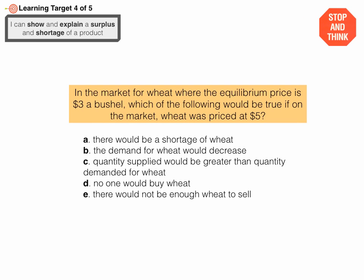Stop and think. Answer this question. Pause the video. In the market for wheat where the equilibrium price is $3 a bushel, which of the following would be true if wheat was priced at $5? The answer is C. At $5, a price higher than the equilibrium price of $3, quantity supplied would be greater than quantity demanded for wheat—that would be a surplus of wheat.